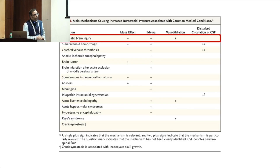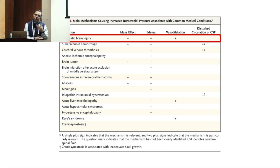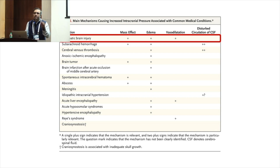Specifically talking about traumatic brain injury — how does it cause raised ICP? First of all, mass effect, obviously; increase in the volume of blood within the brain; edema of the brain tissue because of injury; vasodilatation which may occur subsequently; impaired autoregulation, and so on. All this leads to a cascade of events which leads to further secondary brain injuries.